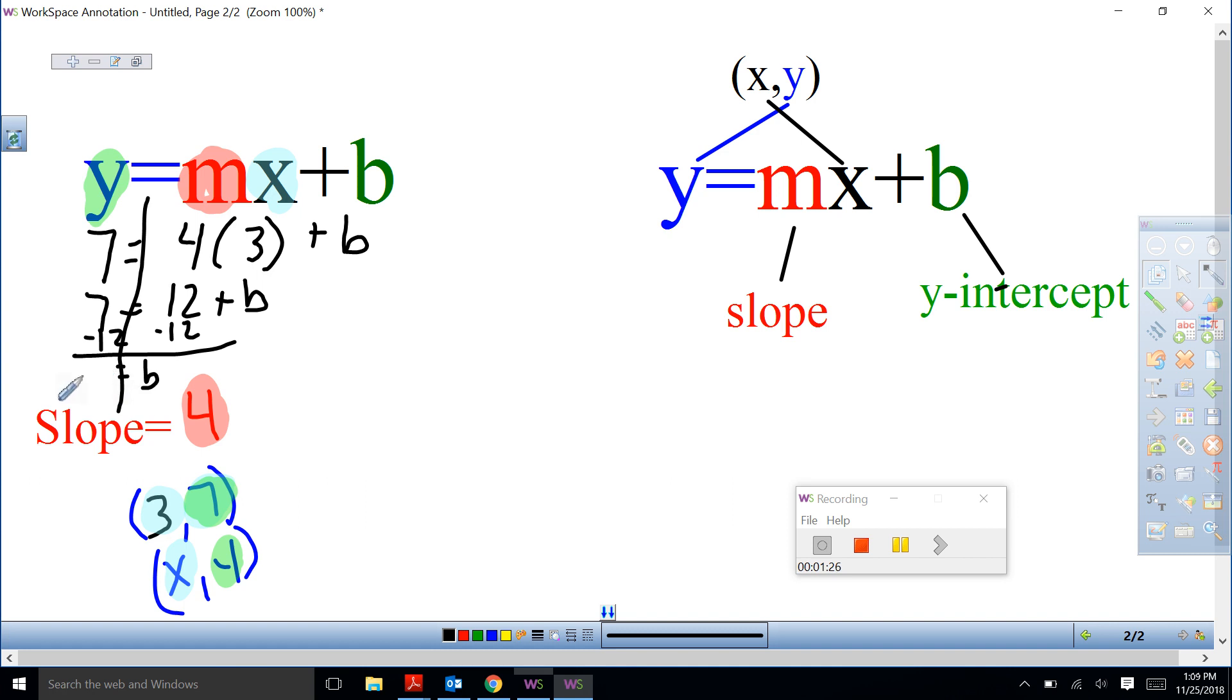B equals negative 5. If I wanted to rewrite that equation in slope-intercept form, I would write Y equals 4X minus 5, because this is my new Y intercept.